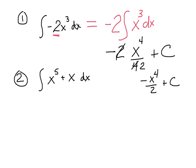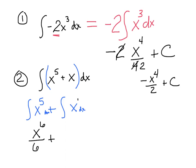Number 2: the integral of x to the 5th plus x dx. If you're adding, you can split these integrals — the integral of x to the 5th, plus the integral of x, each gets a dx. The integral of x to the 5th is x to the 6th over 6, plus x squared over 2. Don't forget the plus c — you only need one plus c on the final answer.